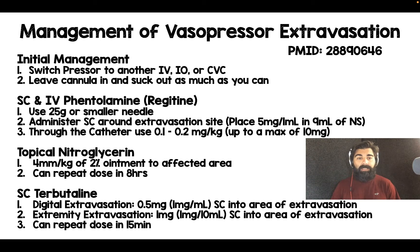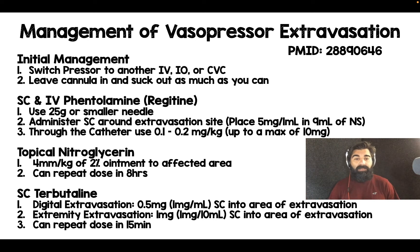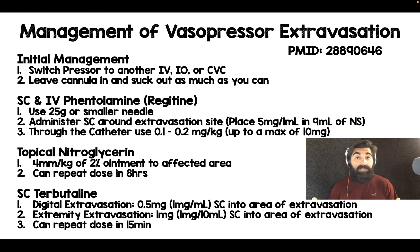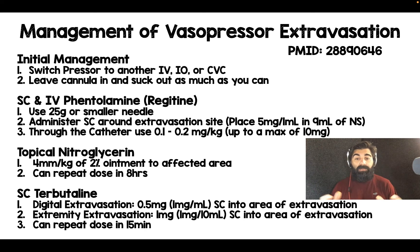If phentolamine is not an option, sub-Q terbutaline might be — especially for digital extravasation where it's a tight space and we don't want to put a lot of volume in, such as someone who accidentally injects their finger with an EpiPen. Terbutaline comes in one milligram per ml; take half that ml and inject it around the digit. For extremity extravasation, the dosing is one milligram in 10 ml injected into the subcutaneous tissue around the catheter, and you can repeat that dosing every 15 minutes.